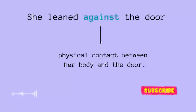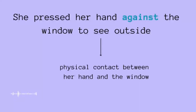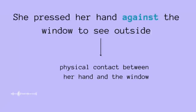Another example: 'she pressed her hand against the window' — why? To see outside. It seems it was difficult for her to open the window, so she had to push it using her hand. That is the physical contact between her hand and the window. Instead of saying 'she used her hand to push the window,' you can simply use 'against.'